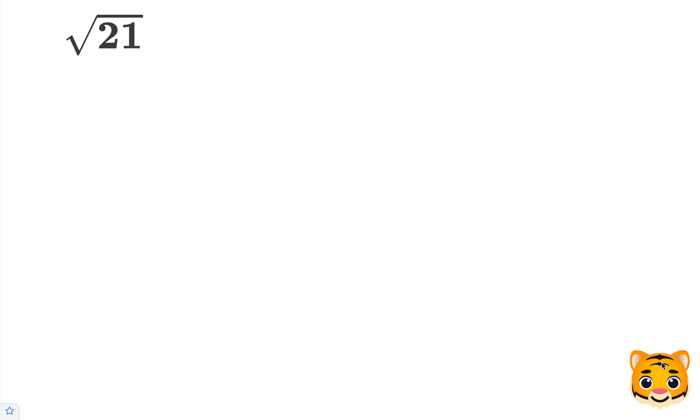In this example, we're going to evaluate the square root of 21 by approximating it to the nearest tenth place value. To do this, we want to look at perfect squares nearby to 21.